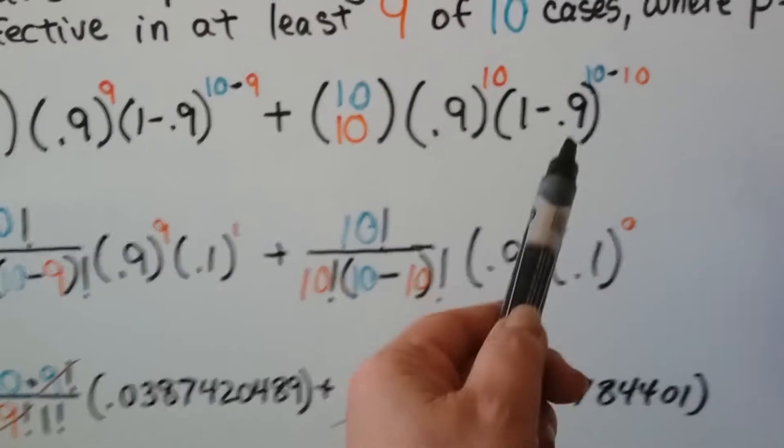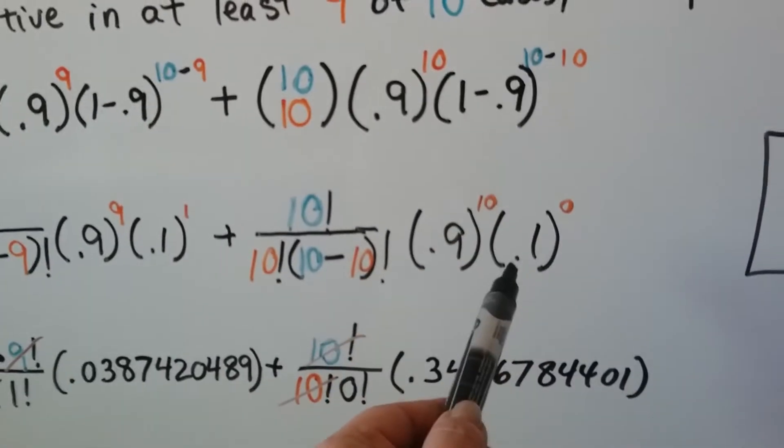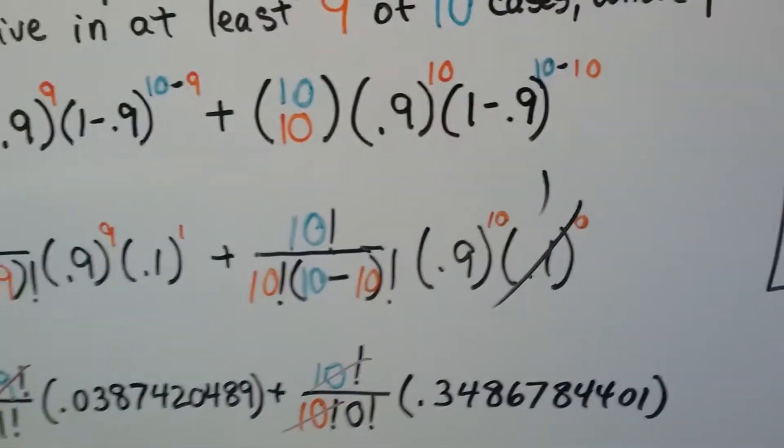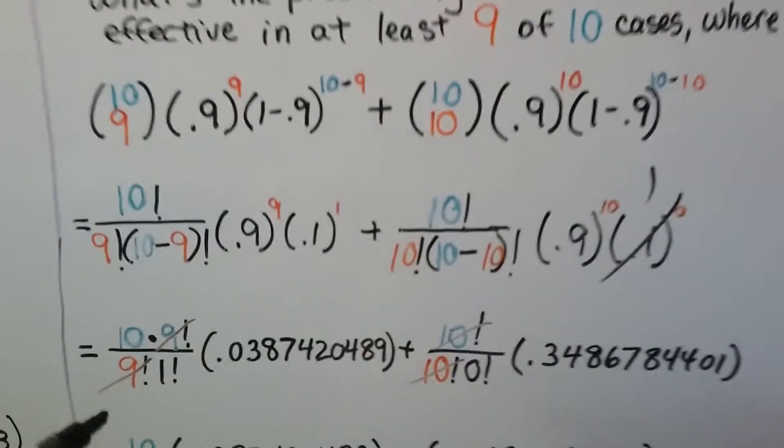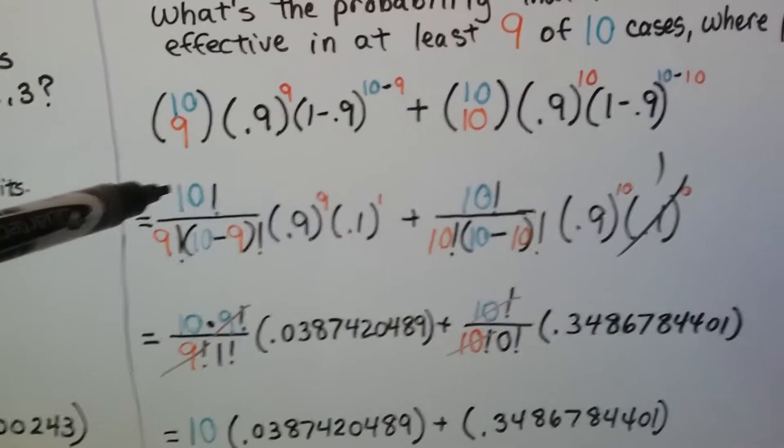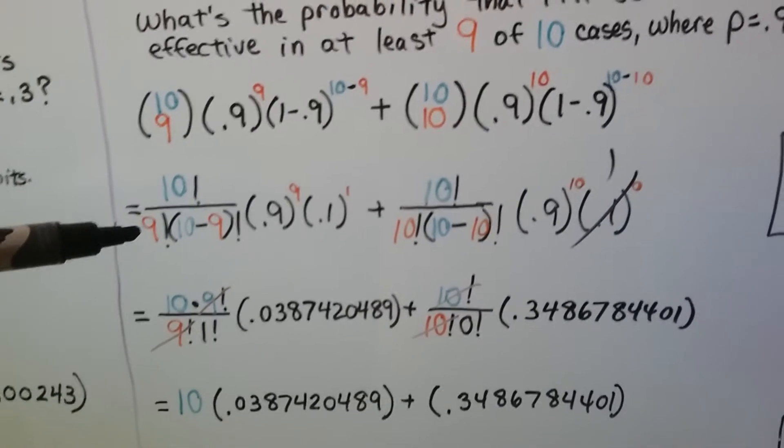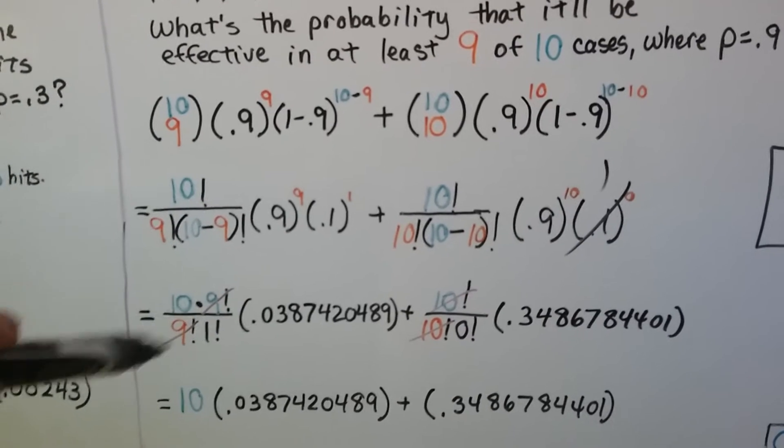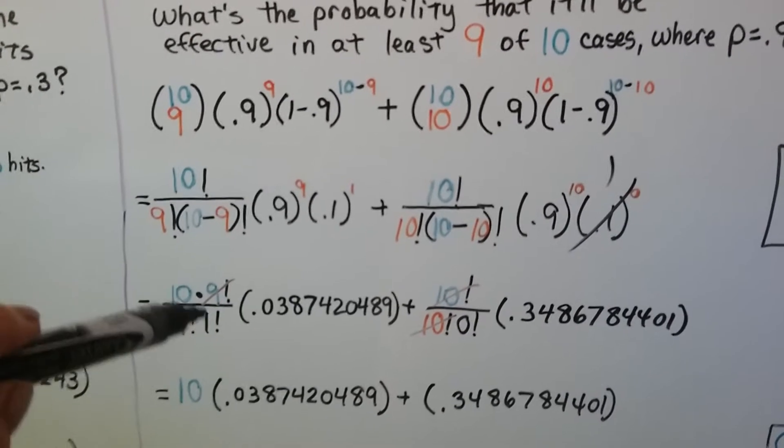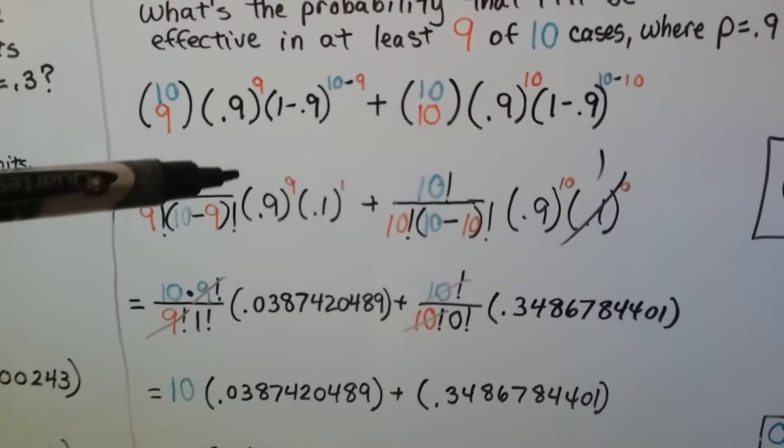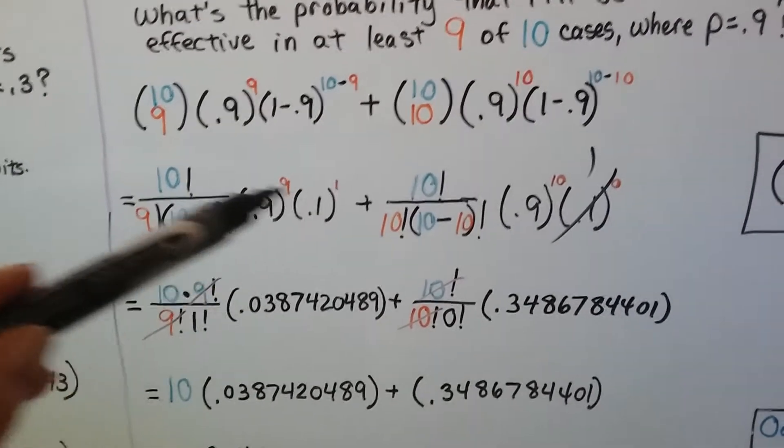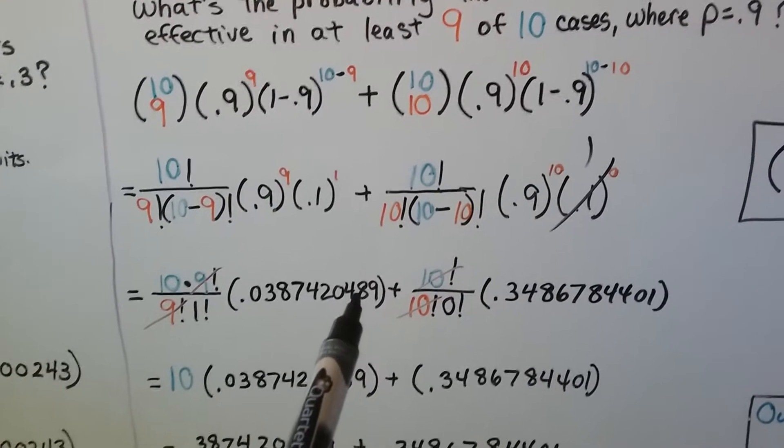So this here is going to simplify as 0.1 to the zero power, which means we've got a 1 here. We can write the 10 choose 9 as 10 factorial over 9 factorial times 1 factorial. We write the 10 factorial with a factor of 9 factorial and cancel them out. So we've just got 10 over 1. That's a 10. Here we've got our 0.9 to the ninth power times 0.1. We get this nice long decimal.